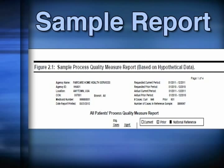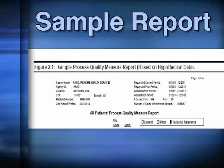One difference between the process quality measure report and the OBQI and OBQM reports is that there is no risk adjustment. Risk adjustment is a statistical technique used when making comparisons between groups that takes into account baseline differences. Risk adjustment is not necessary for process quality measures because the expectation is that the process should be followed for every patient for whom it applies. The header information is very similar to other CMS quality reports—agency information on the left, and dates covered by the report on the right.